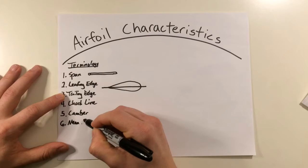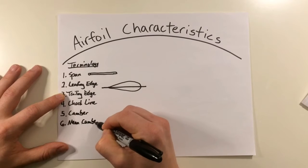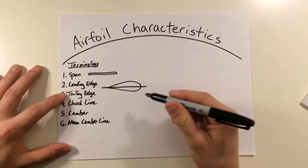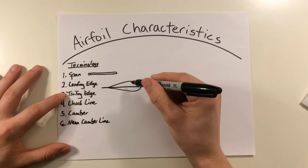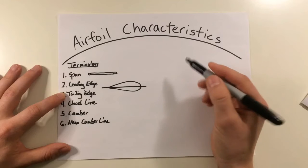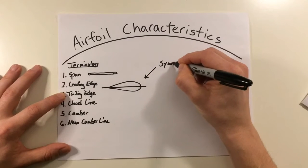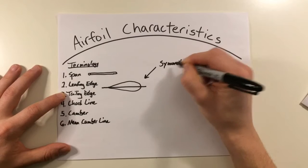Next, we have the main camber line. Now, the main camber line is the line midway between the upper and the lower surfaces. And this airfoil right here, there's not much of a difference between that and the chord line. And that's because this one right here is a symmetric airfoil.